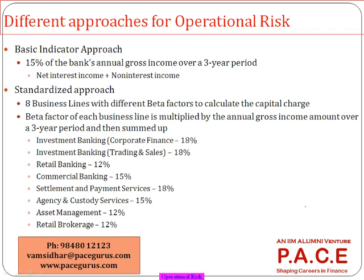Basel has suggested three approaches for measuring operational risk. The first two are straightforward. The first is the Basic Indicator Approach, where you compute the gross income of the bank over the last three years — annual gross income being interest income plus non-interest income, extracted directly from the P&L statements. You then take 15% on top of that total, a percentage decided by Basel, as your operational risk capital charge.